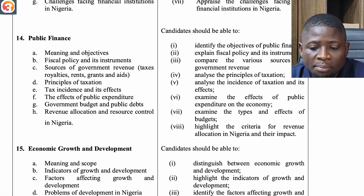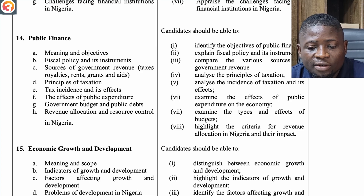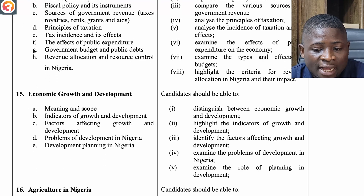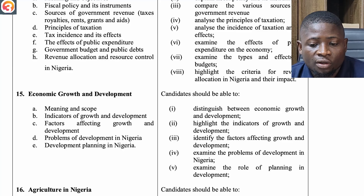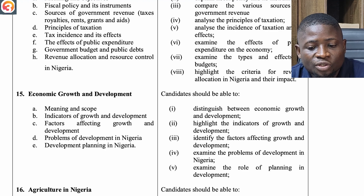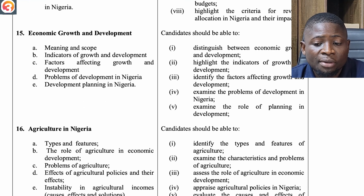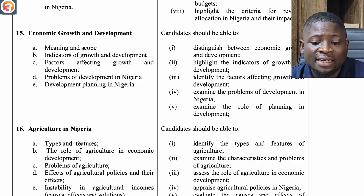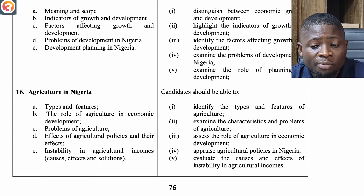The fourteenth topic is Public Finance — meaning and objectives; fiscal policy and its instruments; sources of government revenue: taxes, royalties, rents, grants and aids; principles of taxation; tax incidence and its effects; effects of public expenditure; government budget and public debts; and revenue allocation and resource control in Nigeria. The fifteenth topic is Economic Growth and Development — meaning and scope, indicators of growth and development, and factors affecting growth and development.